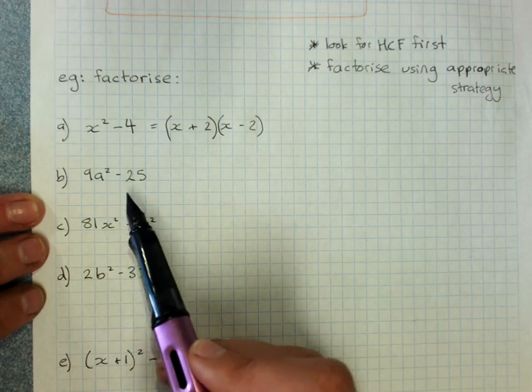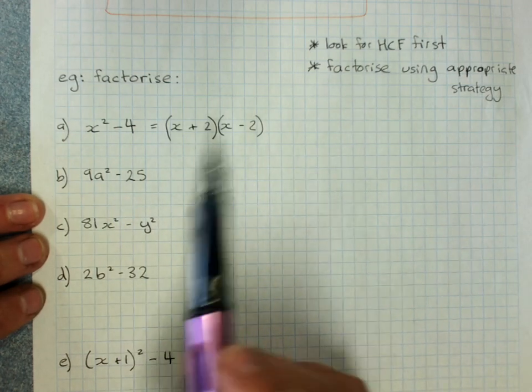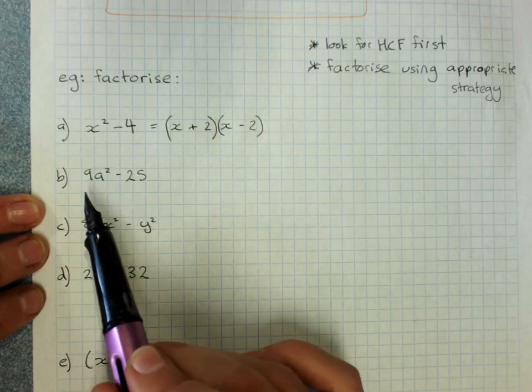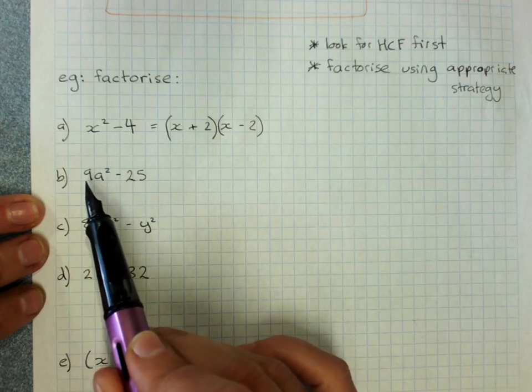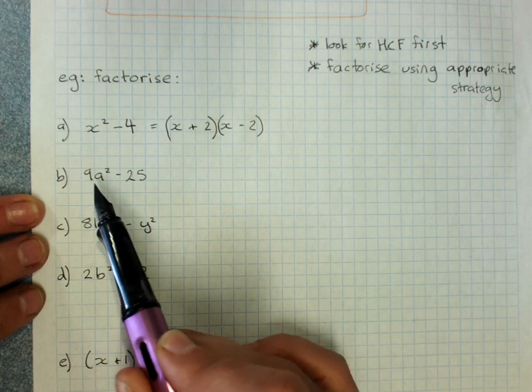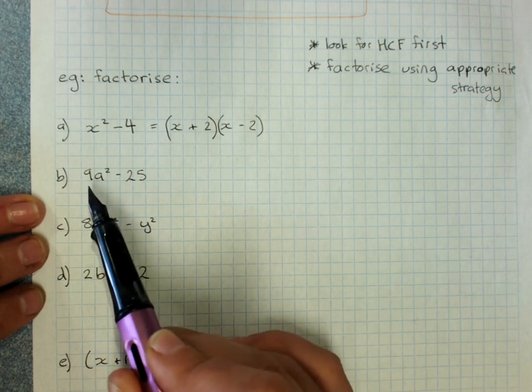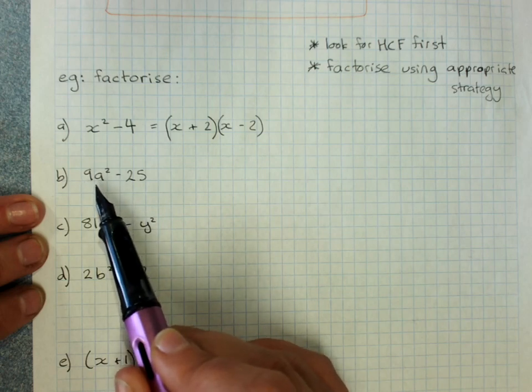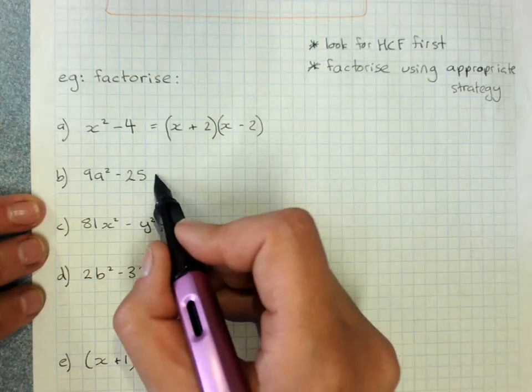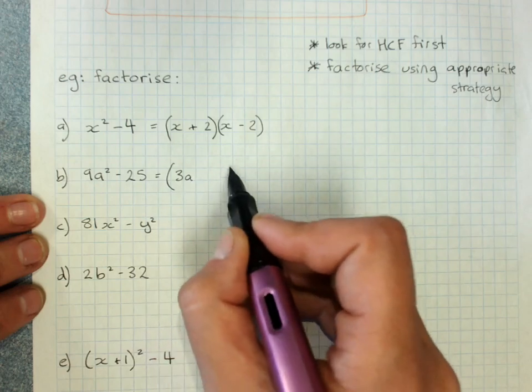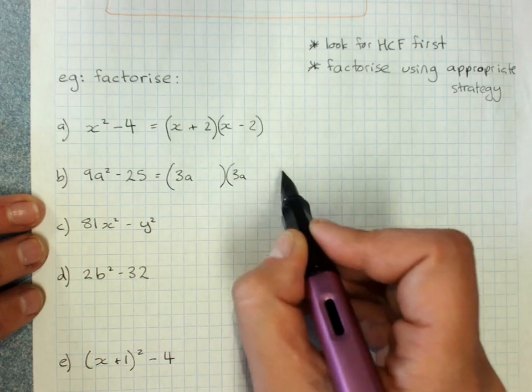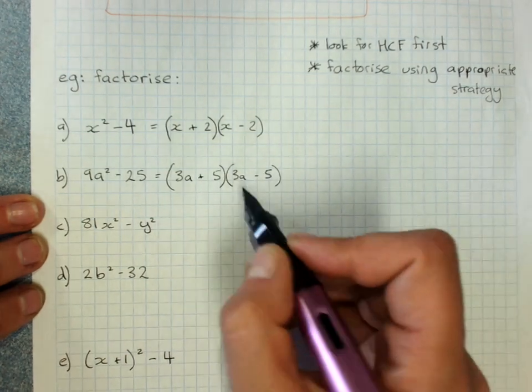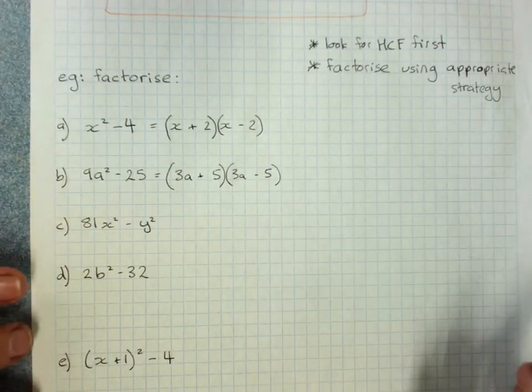9a squared minus 25. Check for a HCF, nope. 9a squared, recognize that 9 is 3 squared. a squared is a squared. So the square root of this term is 3a. The square root of this term is 5. Plus and minus. It can be minus and plus if you want to make it really exciting.